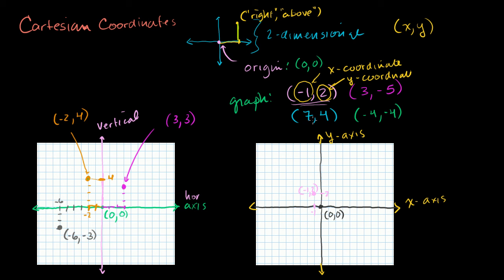The next one is 7, 4. So we're going to go 7 to the right — we have a positive number, so we go to the right: 1, 2, 3, 4, 5, 6, 7. That's our x-coordinate of 7. And our y-coordinate is positive 4, so we go 4 up: 1, 2, 3, 4. So the point 7, 4 is right there.